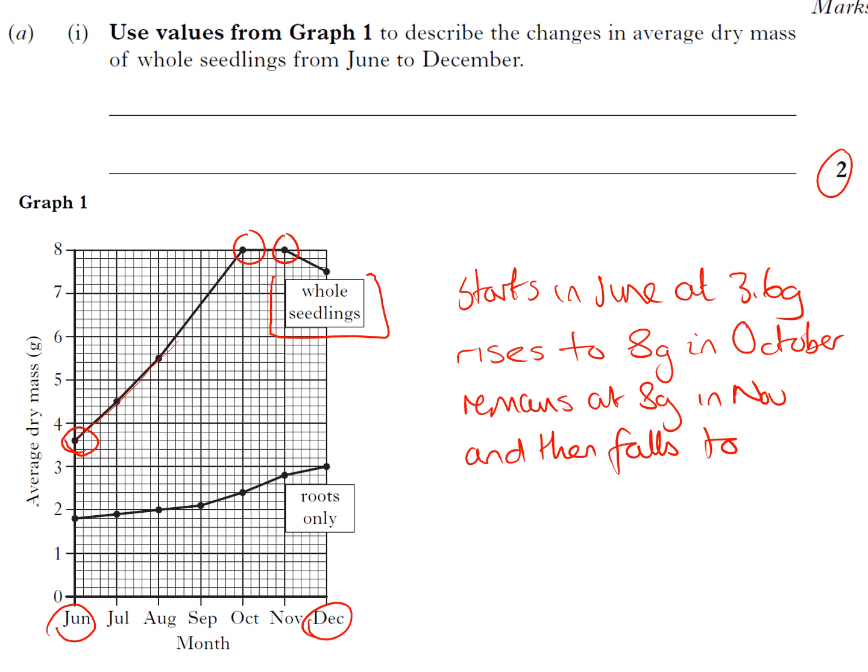And finally, then falls to this point here. Now you are expected to be able to work to a half-box tolerance, so this is between two lines. There's the half box and you're expected to be able to do that: 7.5 grams in December. It has to be that precise.